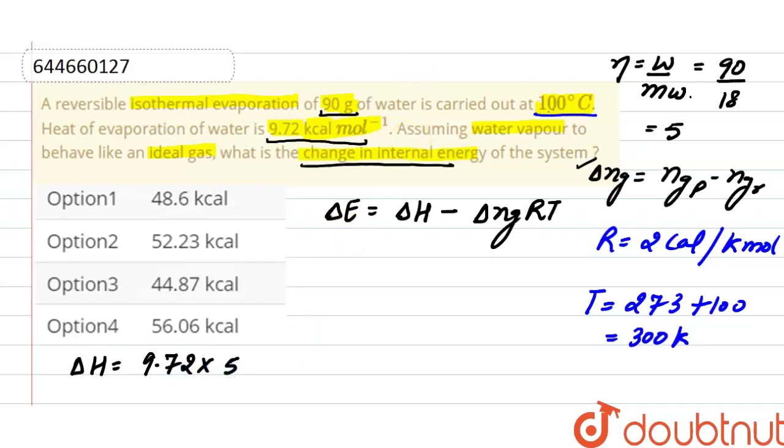Putting the values in the equation one by one, delta E equals delta H, that is 9.72 times 5, minus delta n_g is 5, the value of gas constant is 2, and temperature here is 300 Kelvin.